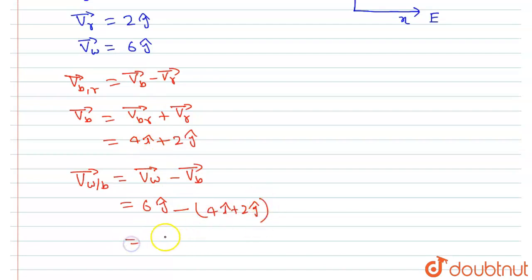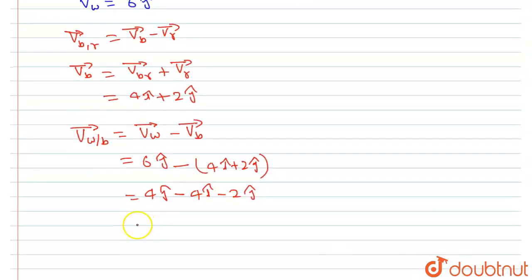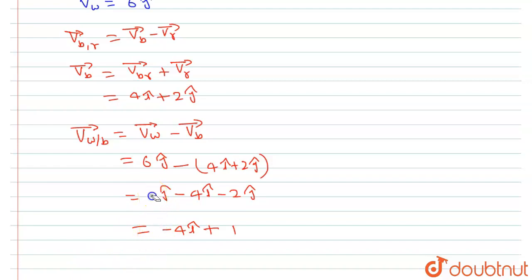Simplifying: 6j minus 4i minus 2j gives us minus 4i plus 4j. So the velocity of the wind with respect to the boat is minus 4i plus 4j.